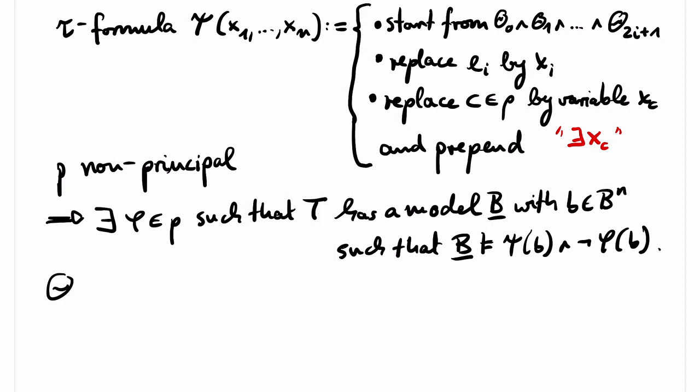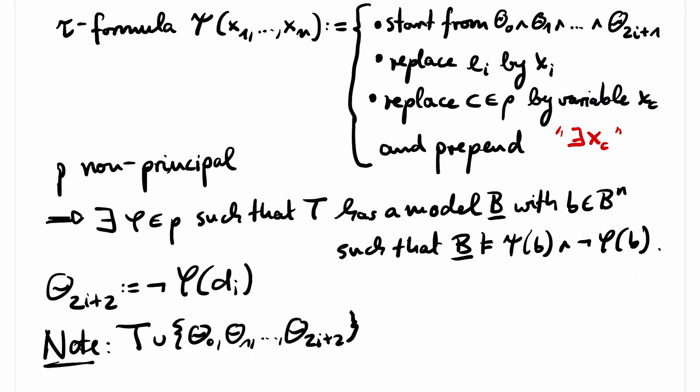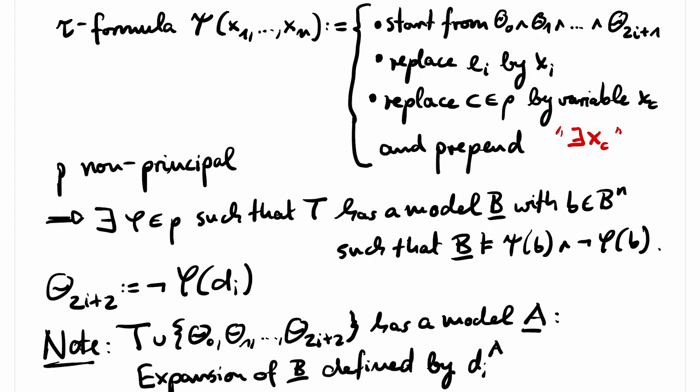Now we define theta 2i plus 2 to be not phi of di. So in every model of this sentence, di has no chance to realize P. Note that T together with all the theta that we have defined so far has a model, namely the expansion of the structure B defined above, where the n-tuple of constants di denotes the n-tuple b.